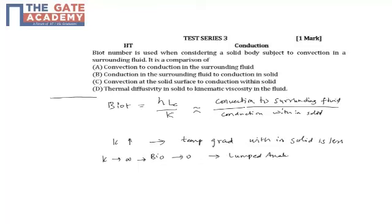But that is difficult to achieve. That is why in lumped analysis we consider that Biot number has to be less than 0.01 or something like that. When the Biot number is less than 0.01, we consider that.